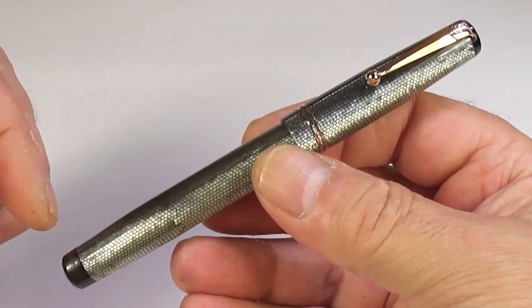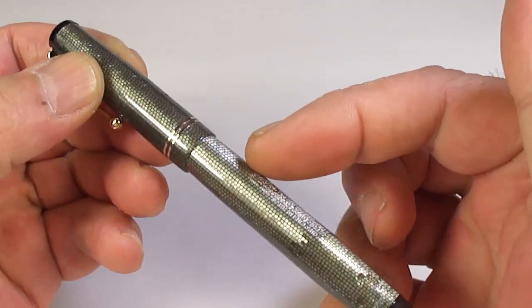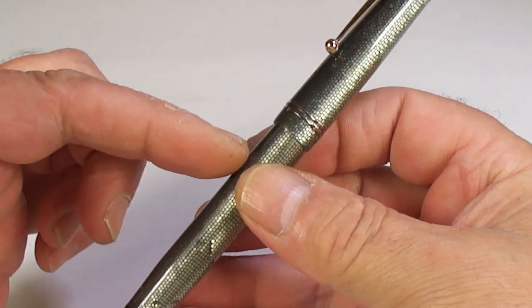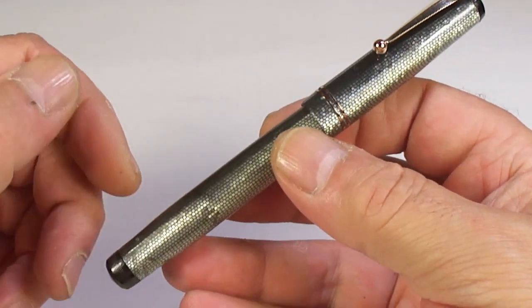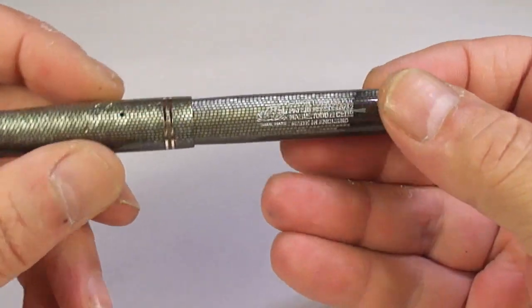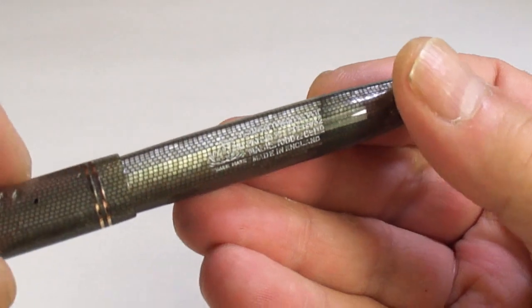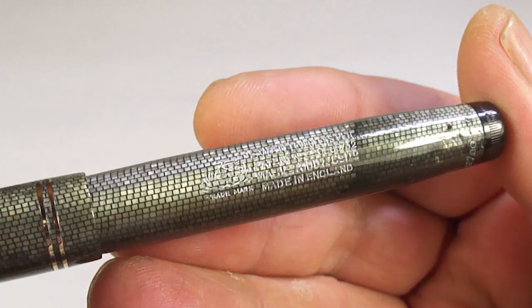It's approximately 132mm capped. Around the diameter of the barrel, it's actually a tad over 12mm in diameter. Now let's first of all show you the barrel imprint. Because of the colour of the pen, I've actually highlighted it for you.